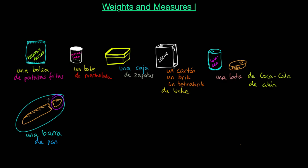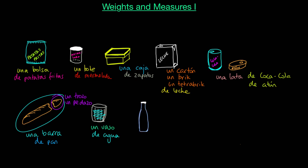Y esto es un trozo o un pedazo. This is la barra — una barra — and a piece is un trozo o un pedazo. Esto es un vaso, and it can be un vaso de agua, por ejemplo. Y esto es una botella — una botella de agua, una botella de vino, etc.